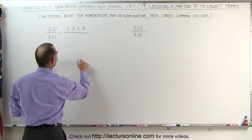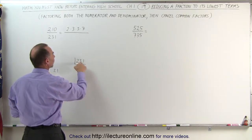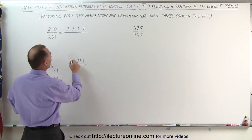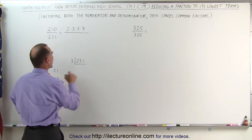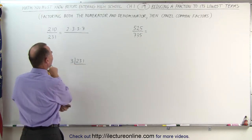So let's try that, 231. Here we're going to use this method. We can see that the sum of these digits adds up to 6, which is a multiple of 3, that means this can be divided by 3. 3 goes into 231, well 3 goes into 210, 70 times.